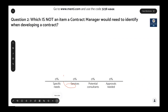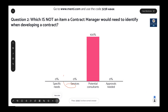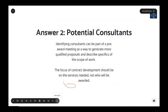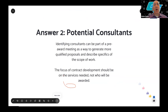Second Mentimeter question: which is not an item a contract manager would need to identify when developing the contract? Choices are specific needs, services, potential consultants, or approvals needed. The correct answer is potential consultants. You can identify consultants in a pre-award meeting to generate more qualified proposals and encourage them to bid, and describe the specifics of the scope of work within the pre-bid meeting. However, the focus of contract development should be on the services needed, not specifically who we're going to award it to.